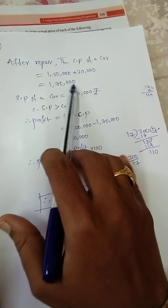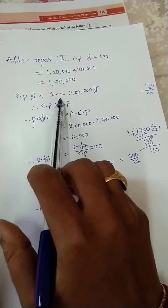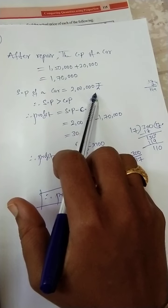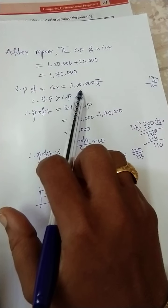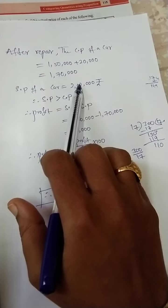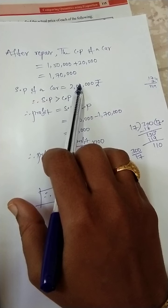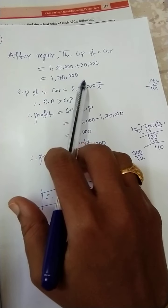Now selling price of a car is 2 lakh. Actually spent on that 1 lakh 70, he sold it for 2 lakh rupees. Now selling price is greater than the cost price.